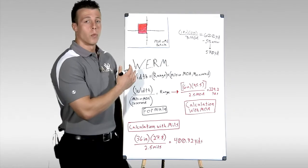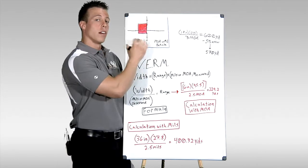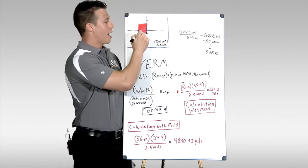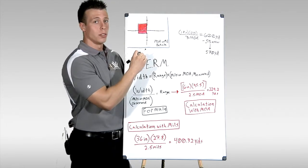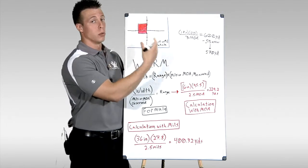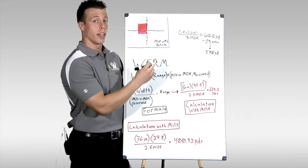The way this system works involves taking a target of known size, plugging that into the reticle, seeing how much distance is taken up, and then using those known values to be plugged into a formula, which will give us an estimated distance to the target.